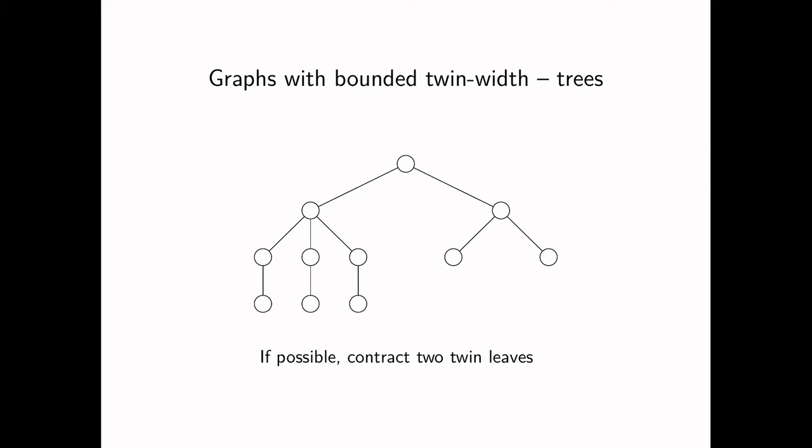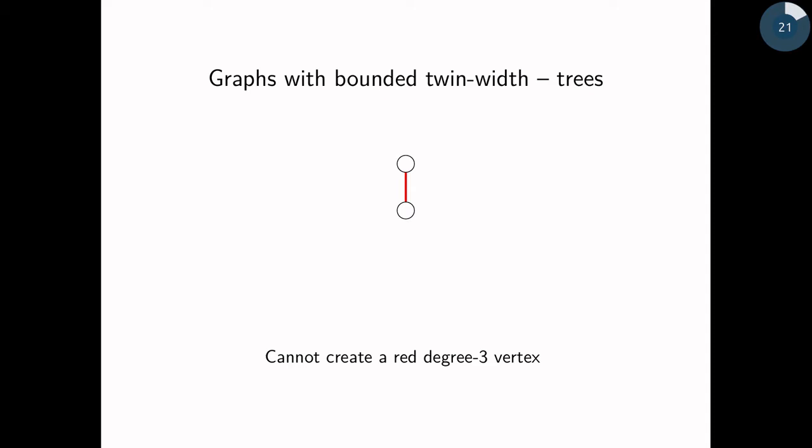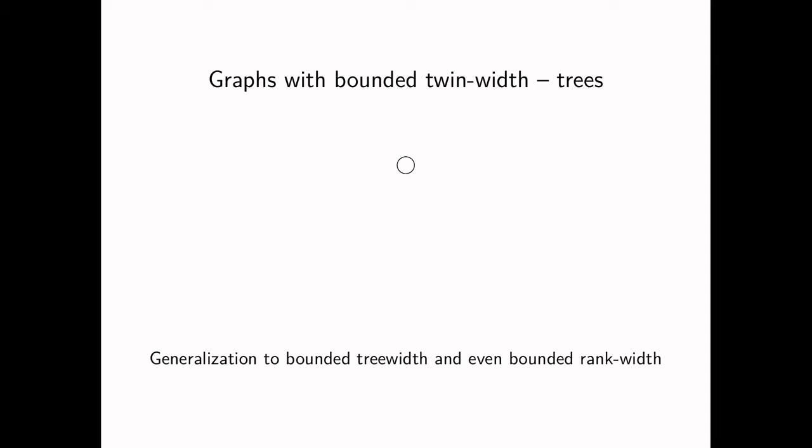What we can do in trees is take two leaves with the same parent, two twin leaves, and contract them. We'll do that whenever possible. Now it's not possible anymore, so we'll have a second rule, which is to take a deepest leaf and contract it with its parent. So we'll get this trigraph. Again, no twin leaves, so we go with the second rule. And now the first rule kicks in because we have two leaves that are twins. And because we gave precedence to the first rule, it's easy to see that we'll never create a vertex with red degree 3. Meaning that trees have twin-width at most 2.